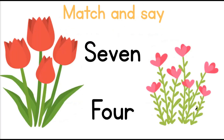Let's match and say. Here we have 2 groups of flowers, one that's red and one that's pink. We also have 2 numbers: 7 and 4. So let's count the flowers, match and say the words. 1, 2, 3, 4, 5, 6, 7. There are 4 red flowers. 1, 2, 3, 4, 5, 6, 7. There are 7 pink flowers.